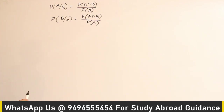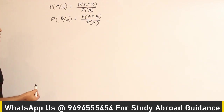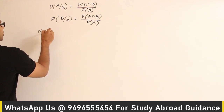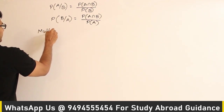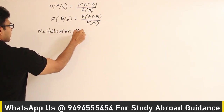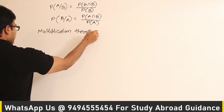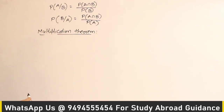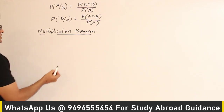We have already seen this. Now from this conditional probability, we derive a new theorem called the multiplication theorem in probability. This is a very important theorem, and for most of the questions from now on, we will be using this multiplication rule.